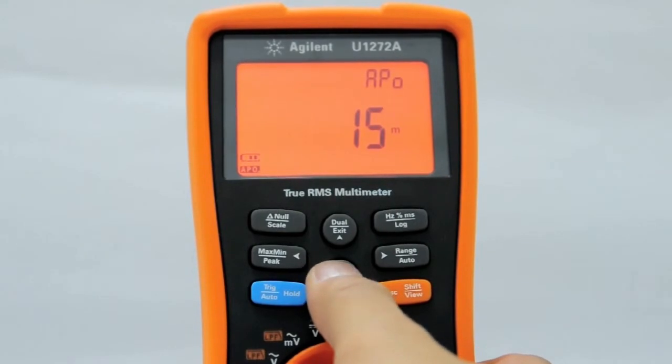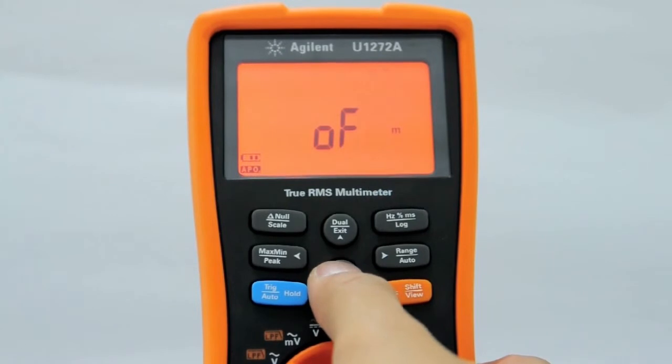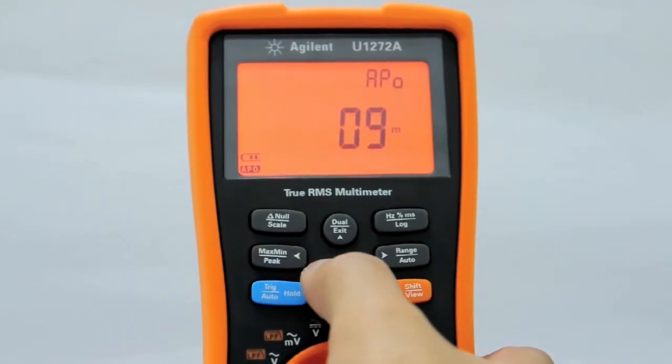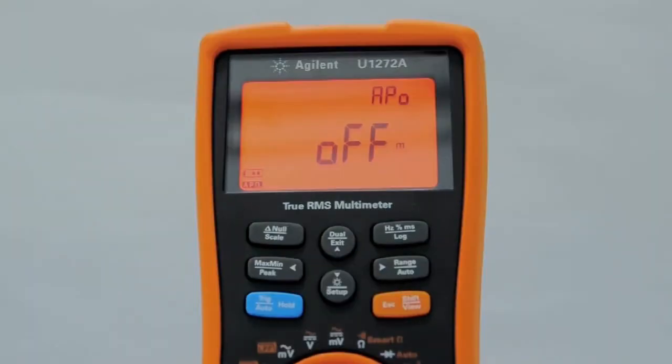Press arrow up or down to select the auto power off timing from 1 second to 99 seconds, or disable the function completely by setting it to off. If you set it to off, the multimeter's battery might go flat if left unattended for long periods of time.